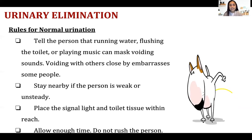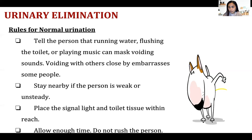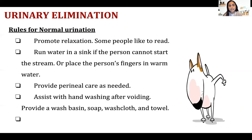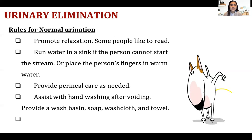Place the signal light and toilet tissue within reach. Allow enough time and do not rush the person, especially if they had an operation using spinal anesthesia — it is very difficult for the patient to void because the bladder is affected by the anesthesia. Promote relaxation; running water in a sink can help the person urinate, as some studies have found.